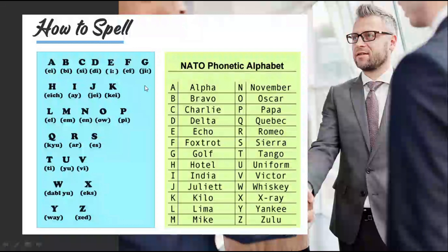NATO phonetic alphabet: Alpha, Bravo, Charlie, Delta, Echo, Foxtrot, Golf, Hotel, India, Juliet, Kilo, Lima, Mike, November, Oscar, Papa, Quebec, Romeo, Sierra, Tango, Uniform, Victor, Whiskey, X-Ray, Yankee, Zulu.